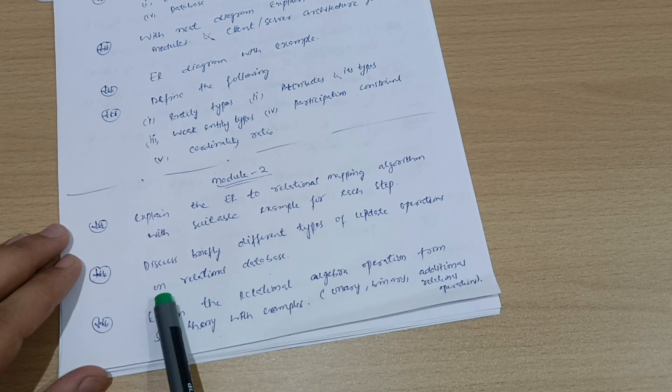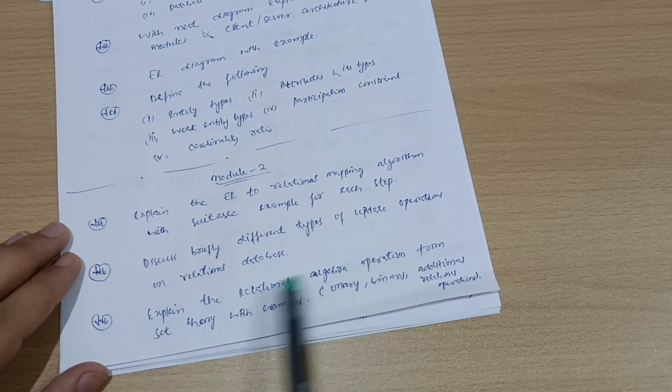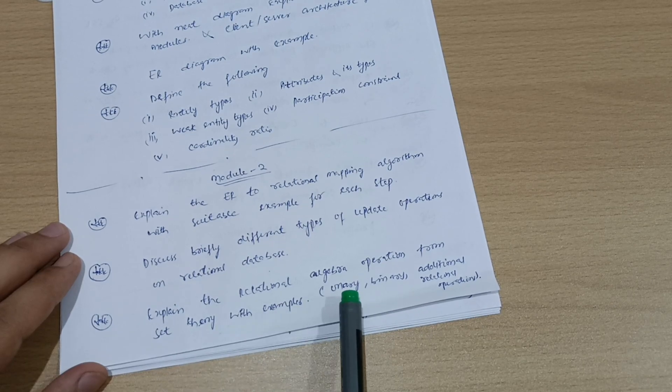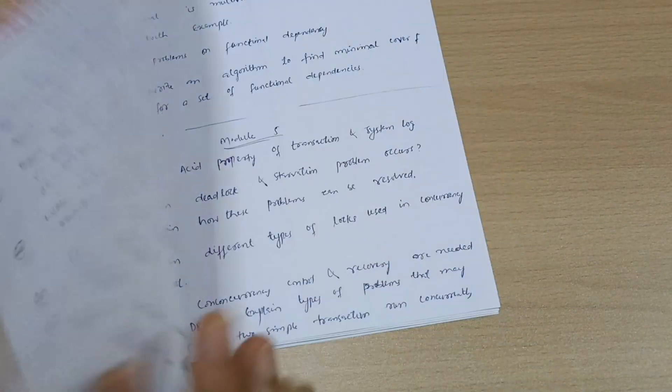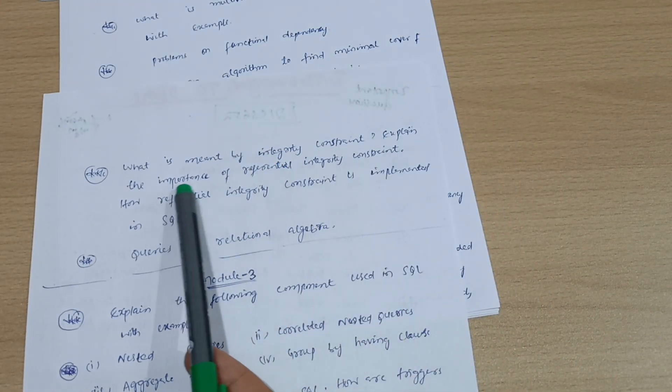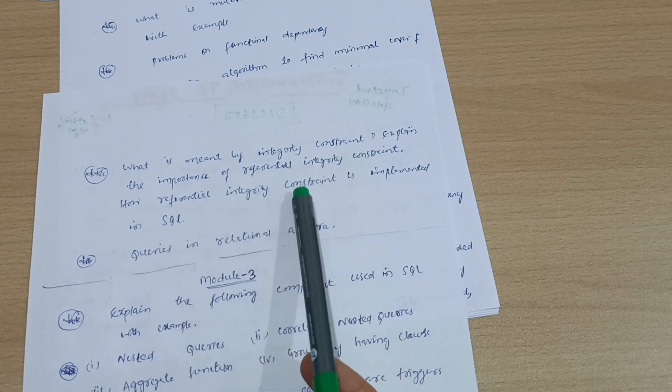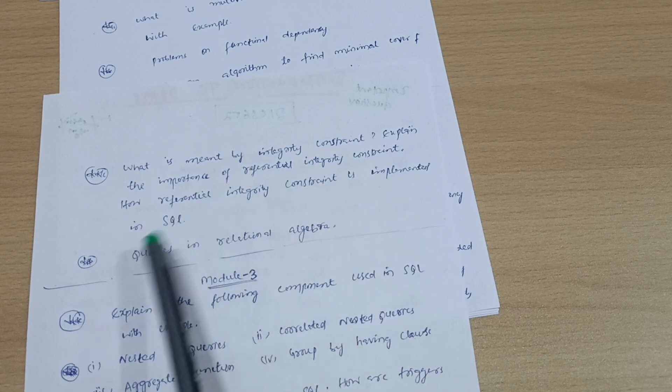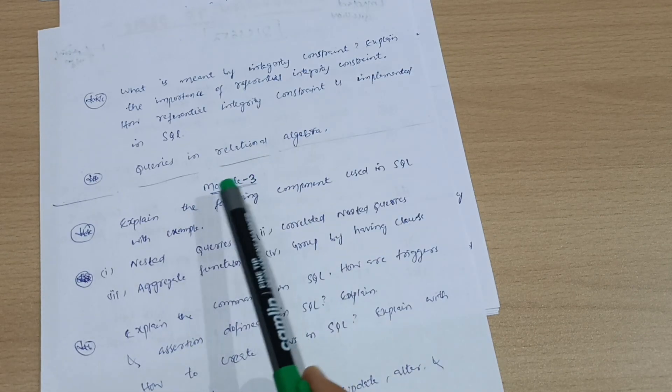Explain relational algebra operations from set theory with examples like unary, binary, and additional relational operations. What is meant by integrity constraint? Explain the importance of referential integrity constraints and how they are implemented in SQL. Queries in relational algebra.